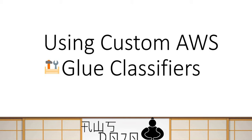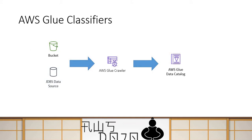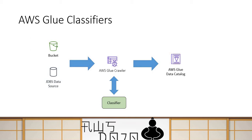Moving on, just to understand what classifiers are. When you're trying to catalog your data in AWS using Glue Crawler, your source data will be in places like JDBC data sources — like your relational databases and Redshift — or your data could also be in an S3 bucket. You use Glue Crawler to catalog the data. When you catalog the data, the data catalog does the classification: it identifies the format of data, the different columns, and the data types, giving you a complete schema. Glue Crawler uses a classifier to determine the schema of the source data, and based on that, it catalogs it.